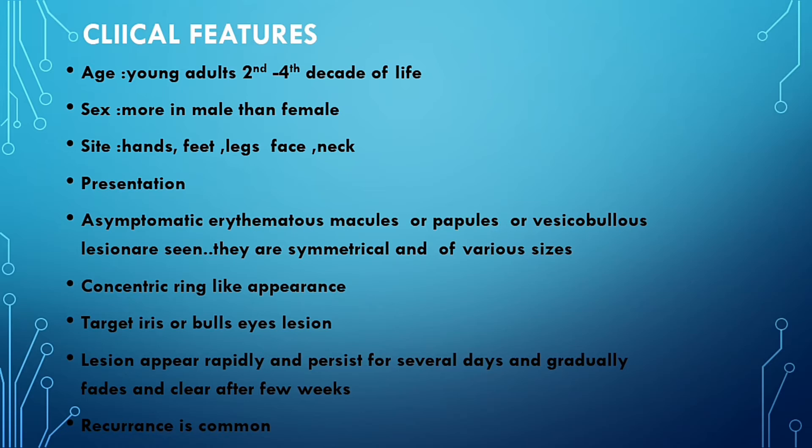Clinical features: it occurs in the second to fourth decade of life, between 20 to 40 years, and is more common in males than females. The sites mostly affected are the hands, feet, legs, face, and neck — mostly on the skin. The presentation is mostly asymptomatic with no pain. The appearance can be erythematous macules (red color patches), papules (slightly raised above the skin), or vesiculobullous lesions.